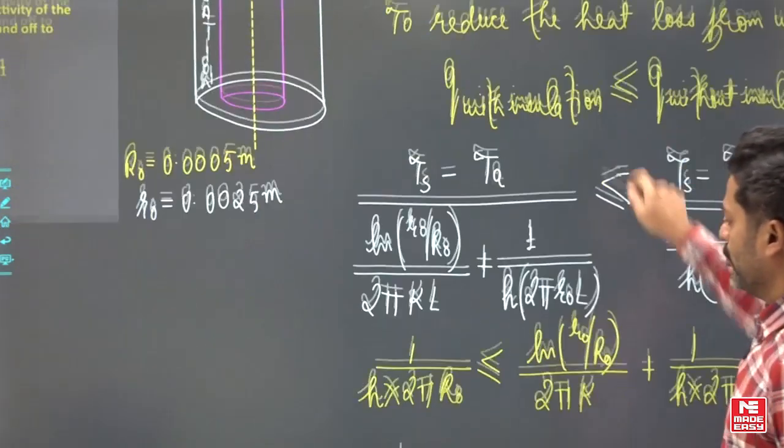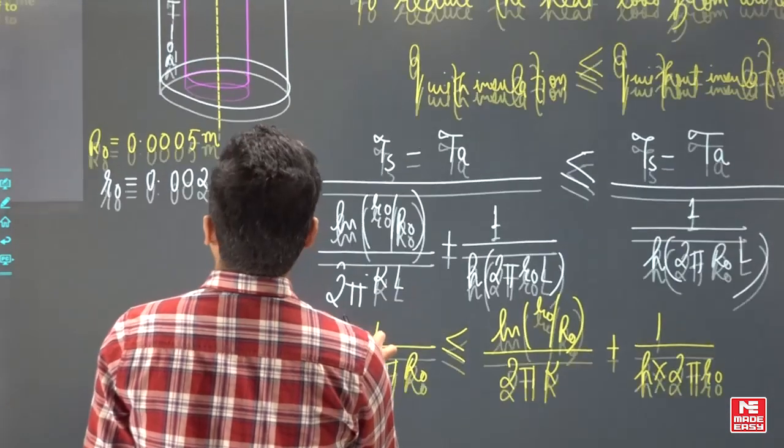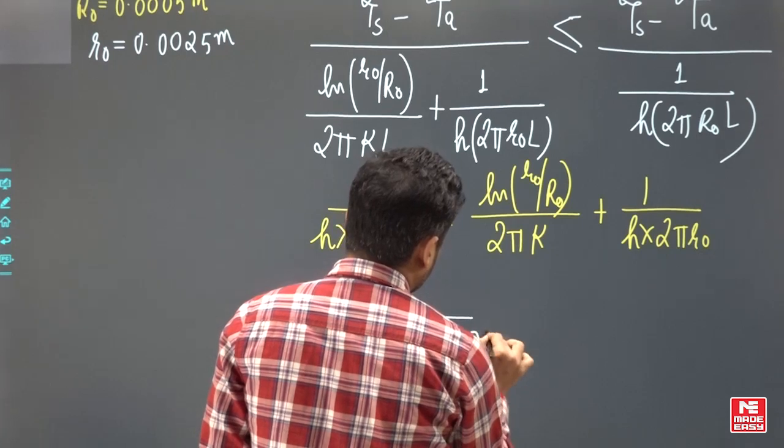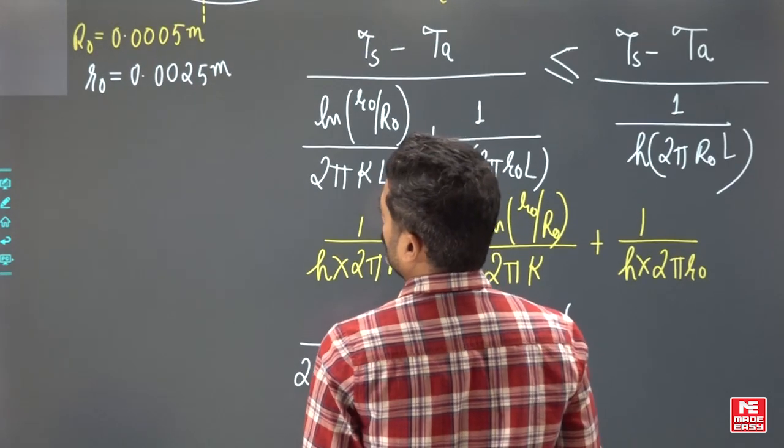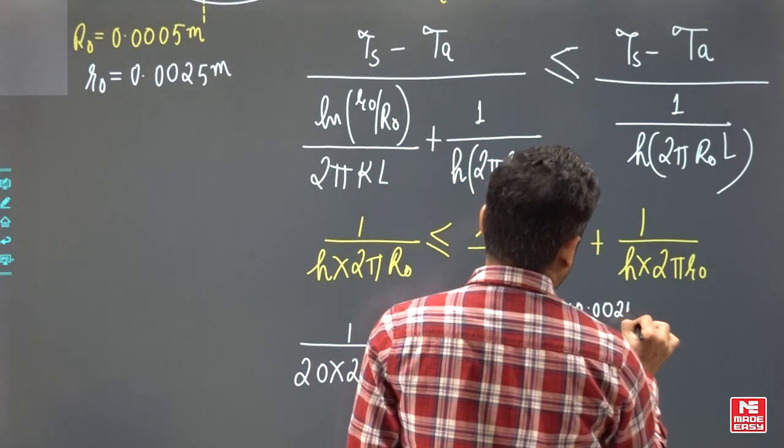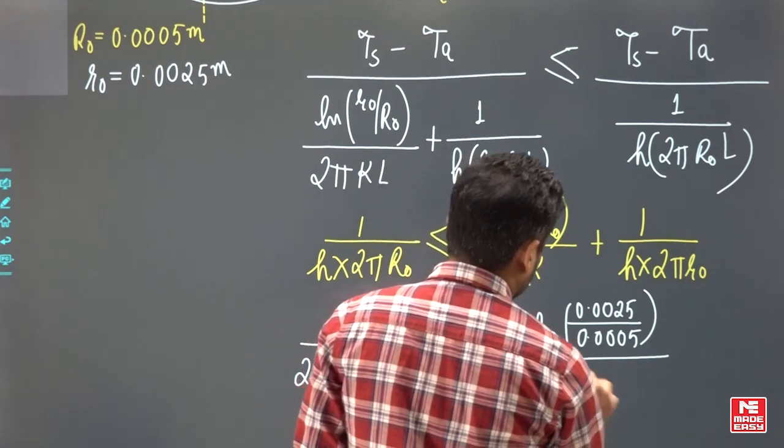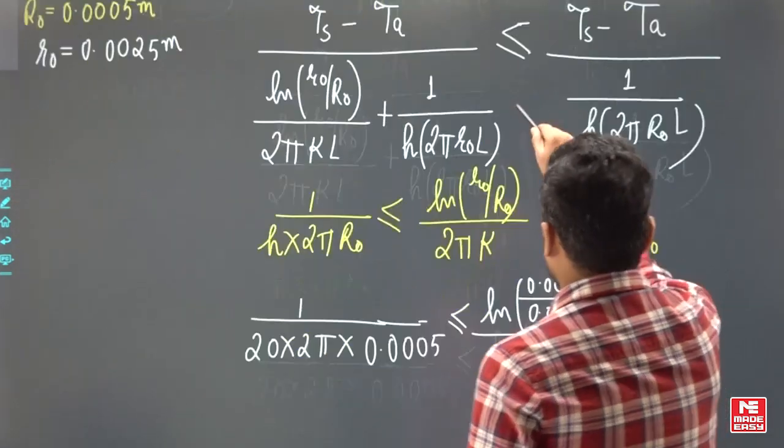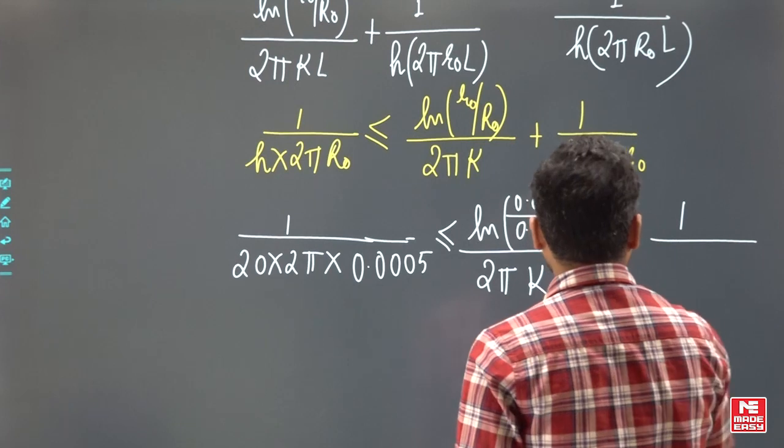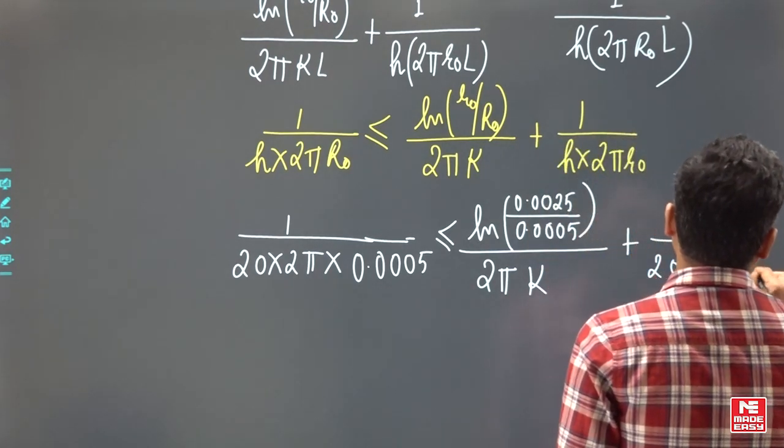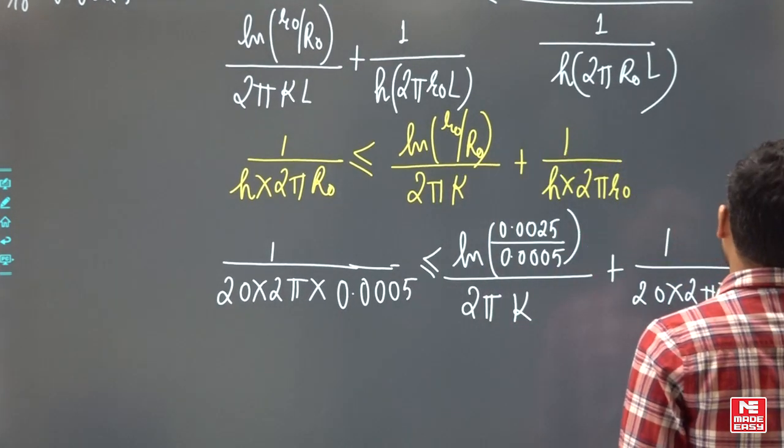Now put the values here. So 1 upon 20 into 2π into capital R_O is 0.005 less than equal to ln small r_O by capital R_O, that is 0.0025 divided by 0.0005 divided by 2πK. K is how much? That you have to calculate actually, plus 1 by H, 20 into 2π into small r_O, that is 0.0025.